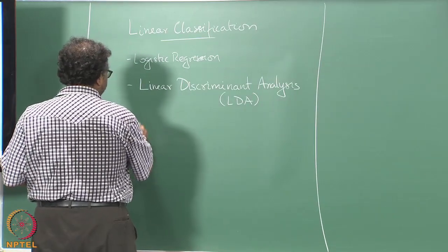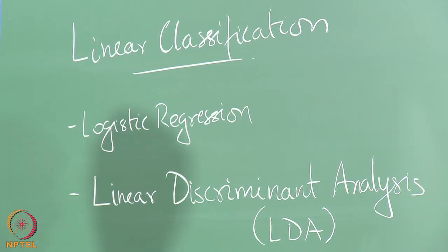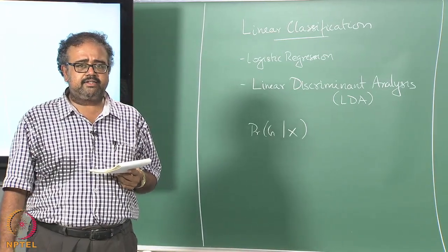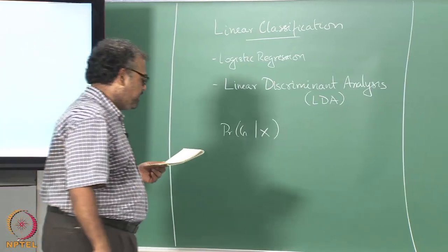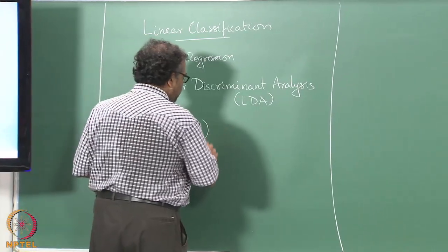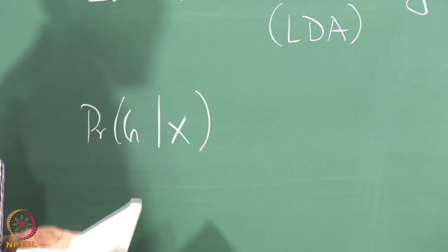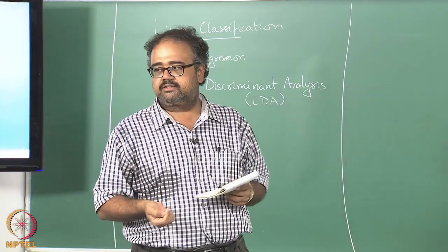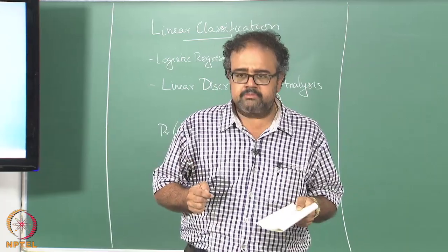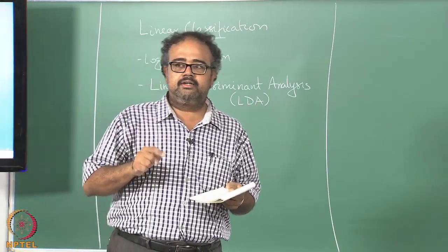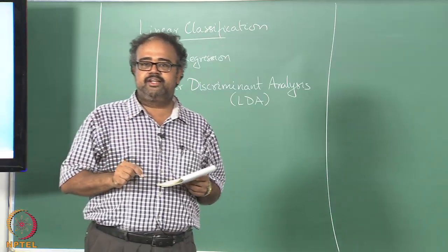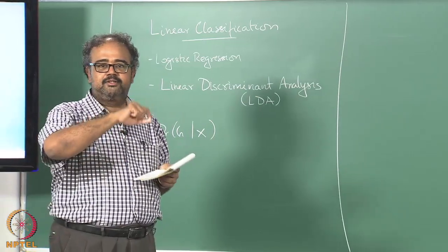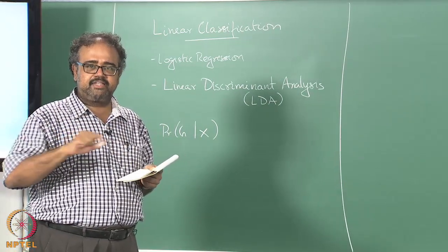If you remember, we are really interested in the probability of a class given the data point. You can get this using Bayes rule if you have the probability of the data point given a class. What else do you need? Probability of the class. So probability of the data point given class times probability of the class divided by probability of the data point.